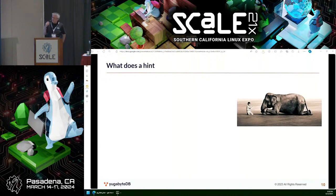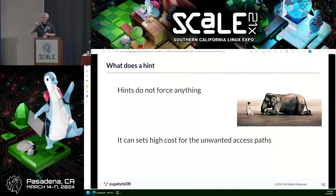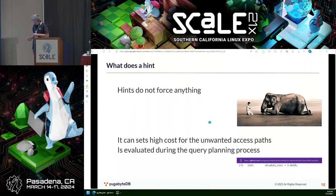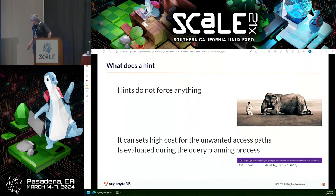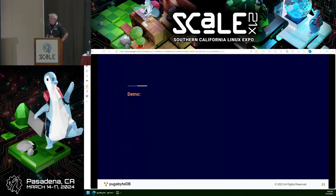Most important to understand: a hint doesn't force anything. People think that with a hint they will force the usage of an index. The hint doesn't force anything — it just sets a very high cost for what is not hinted. For example, if your hint says you want a sequential scan, it will set a very high cost to index access. It uses the same mechanism as when you set 'enable_indexscan' to false. If you hint something that is not possible but it's the only access path, it will use it — just putting a very high cost, but if there is nothing cheaper, that path will be used.